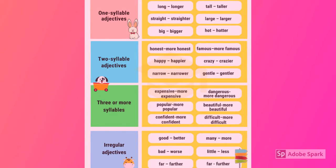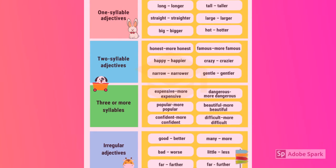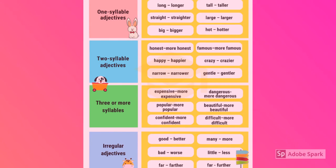As you can see here, we have the one-syllable adjectives, which typically end in ER, like long becoming longer. But two-syllable adjectives are a little trickier. We have to be careful because ones like happy become happier, but ones like honest become more honest, which is quite different.